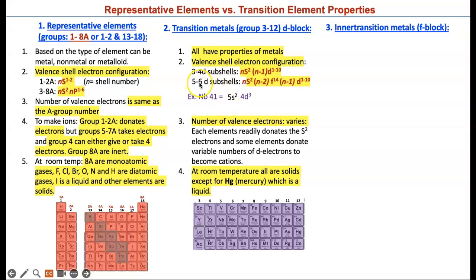If you look at another example of an element between 5 and 6D subshells, its electron configuration will have F electrons in addition. Here is gold. Gold has 5d9 electrons. It's 5d9 here. Its F will be 6s2, and the F will be 4f14, because all the 14 electrons are filled. Number of valence electrons for these guys vary. Each element readily donates the 2s electrons, and some can donate some of the D electrons as well. They all become cations. At room temperature, all these metals are solid except the very toxic mercury.